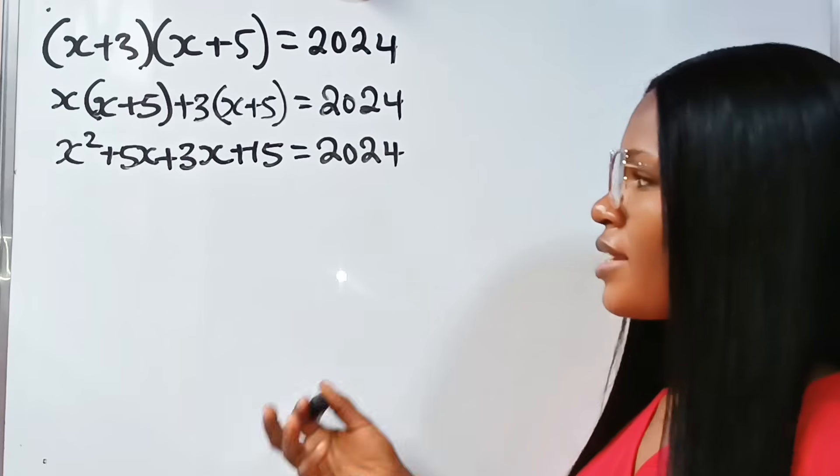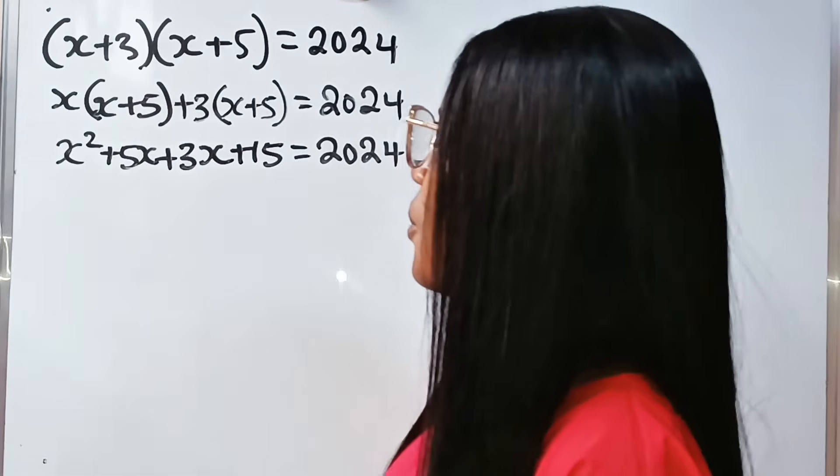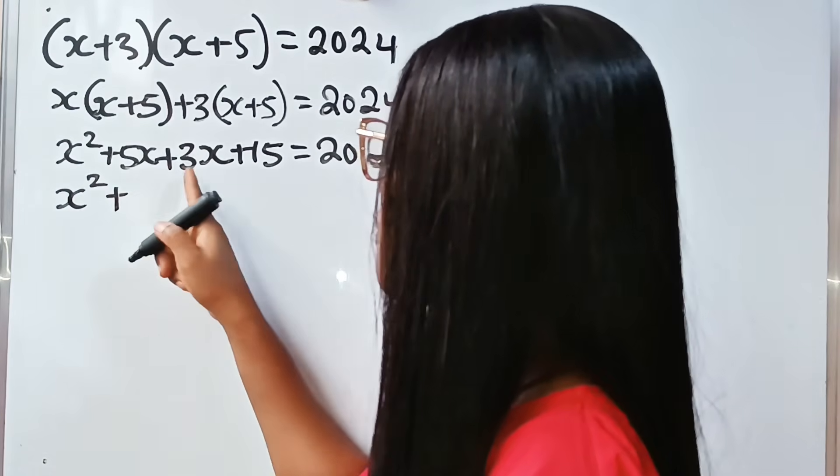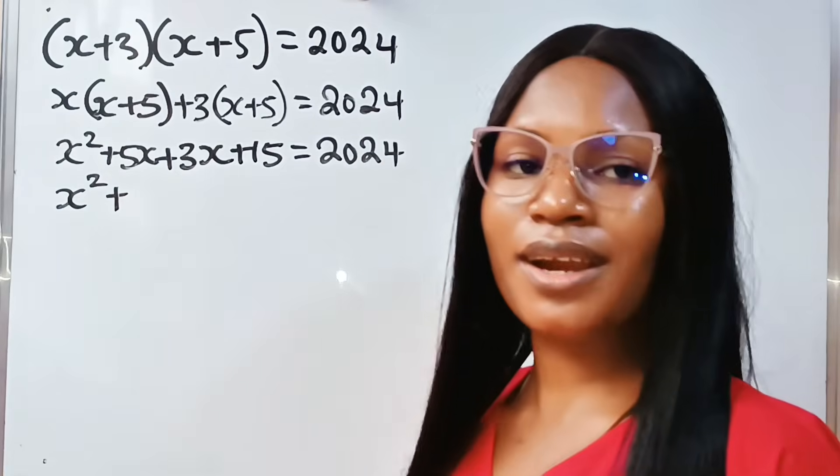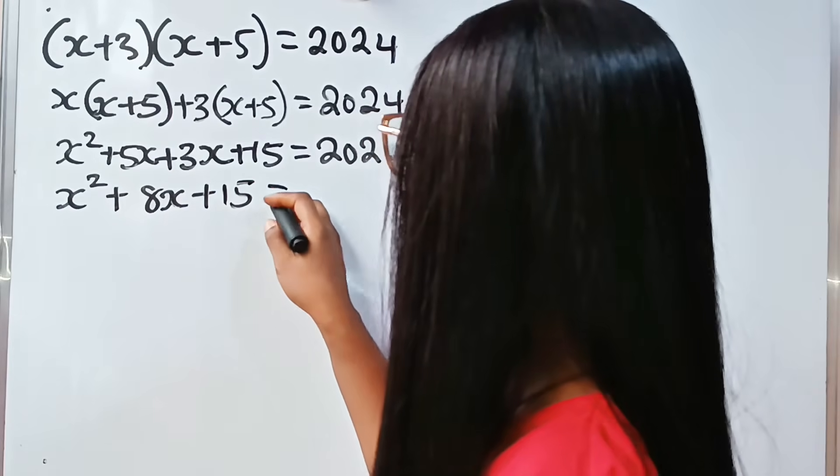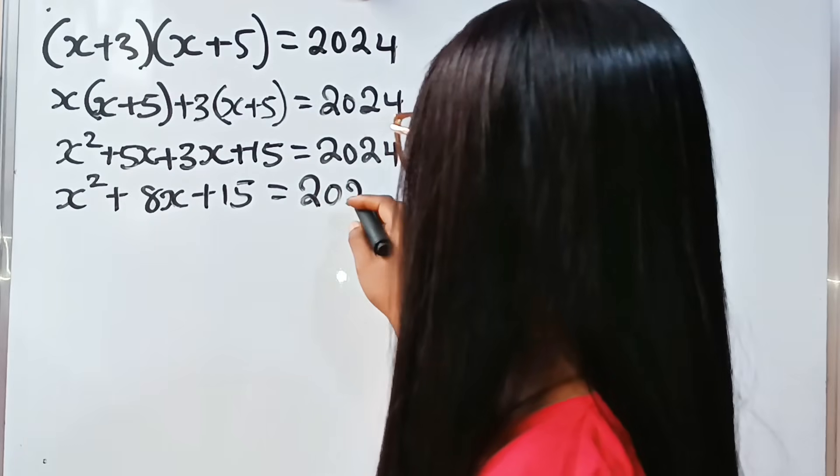Now, if we collect like terms, we have x² + 5x + 3x is 8x, plus 15, equals 2024.